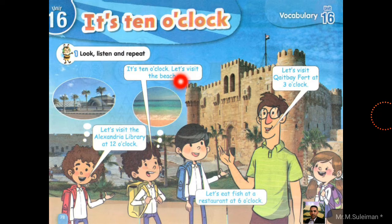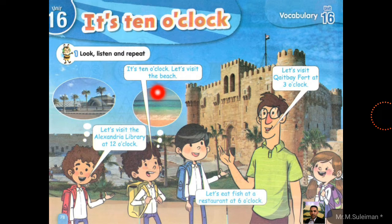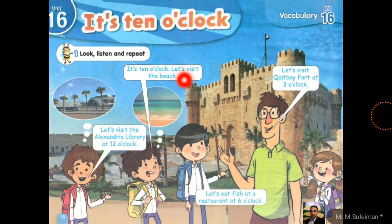Remember: 'let's' plus main verb, plus main verb — let's visit. Also, 'the' plus consonant, we say 'the beach.' 'The' plus vowel, we say 'the.' Again: time is 10, it's 10 o'clock. 'Let's' plus main verb — let's visit. We can't say 'let's visiting,' we can't say 'let's visited.' We should say 'let's visit.'